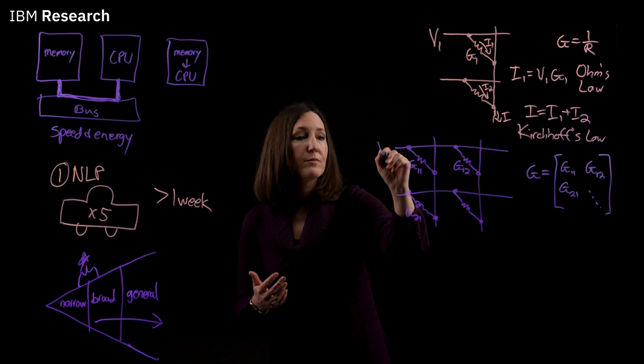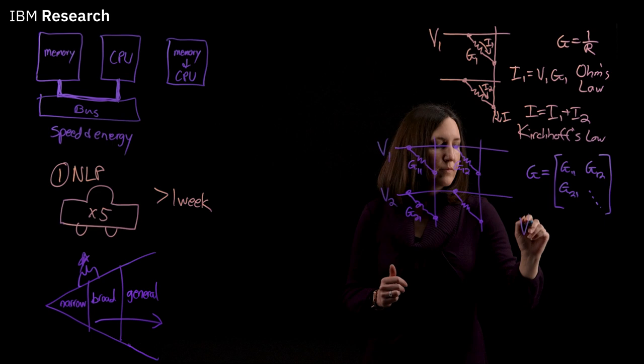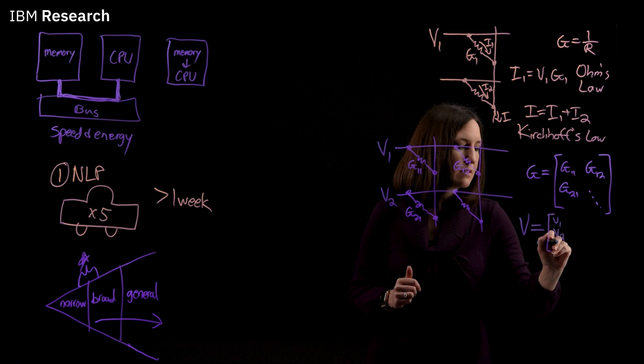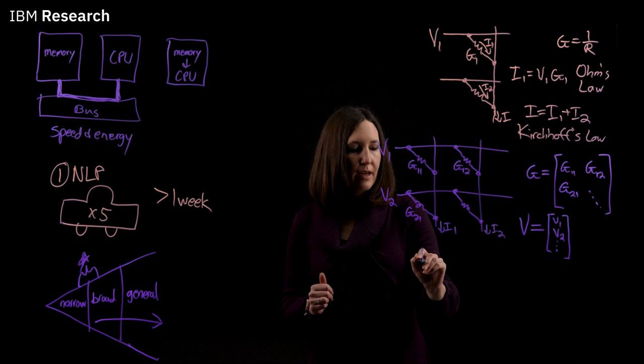We can then apply different voltages to each row of our array, and we can represent that as a vector V of our input voltages. Then our currents coming out at the bottom of our columns can be represented by the resultant vector I, which is equal to our voltage vector times our conductance matrix G.